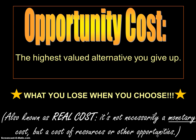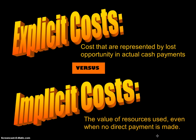There's also a difference between explicit and implicit costs. Explicit costs are actual money payments — handing cash to someone, writing a check, or paying with a credit card. Implicit costs are the loss of resources or other opportunities — the trade-offs and opportunity costs. Implicit cost is the actual non-cash cost, whereas explicit cost is the actual cash cost.